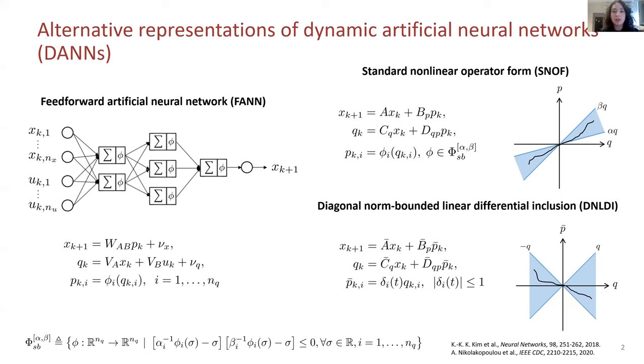DANNs, including deep networks, can be rewritten in the standard nonlinear operator form, SNF. The SNF describes a linear time invariant system in feedback with a static sector-bounded nonlinearity. The SNF can be rewritten as a DNLDI by employing a loop transformation with constant gains from the interval alpha-beta to the interval minus 1, 1.